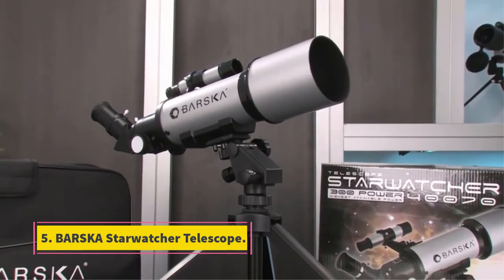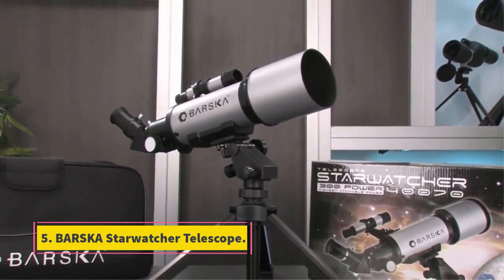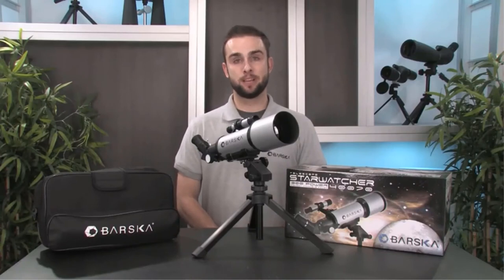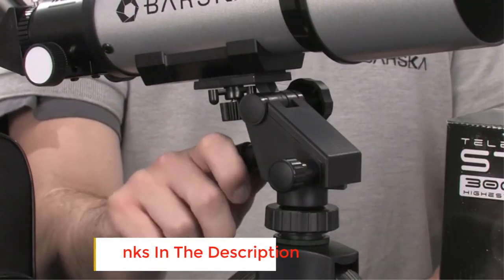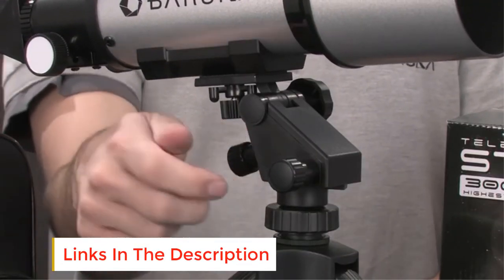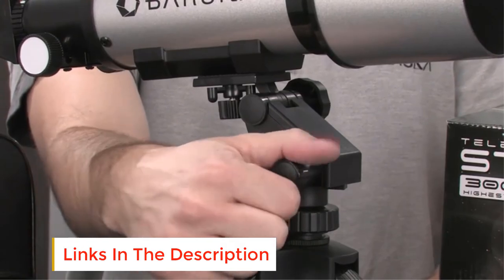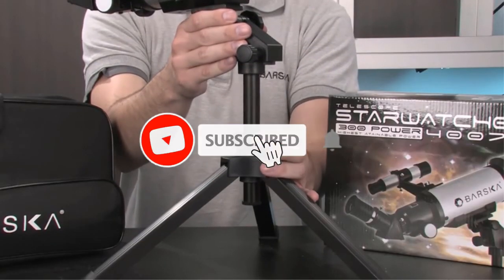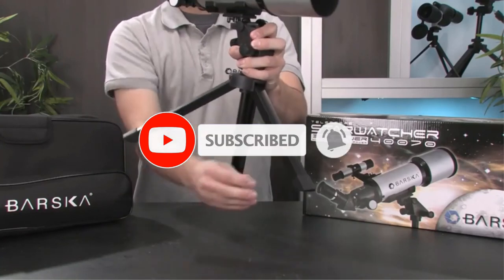At number 5, Barska Starwatcher Telescope. The Barska 400x70 Starwatcher Compact Refractor Telescope with carrying case and tabletop tripod is a great telescope for the aspiring amateur astronomer. It's well suited for those interested in knowing more about the nighttime skies or students. The 70mm objective lens can zoom up to 300x power.